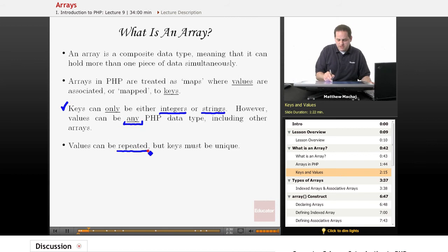Values can be repeated, but the keys must be unique. Because if you had two keys, how would you know which piece of data it refers to?